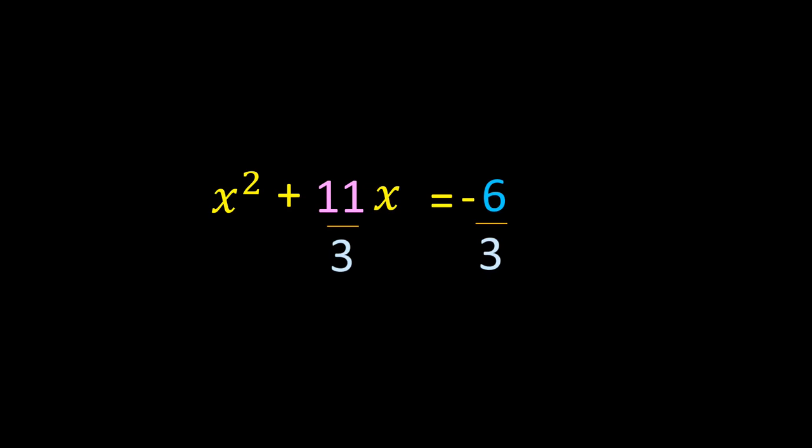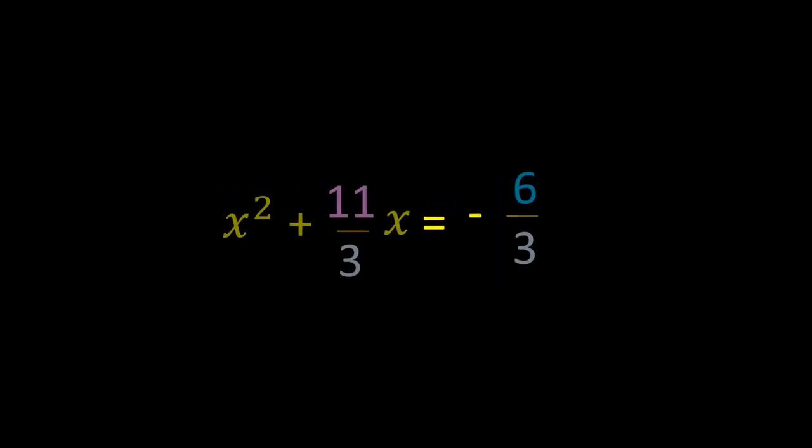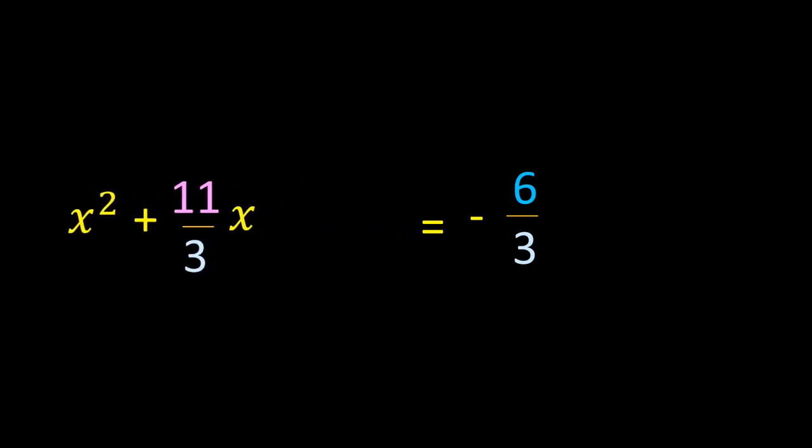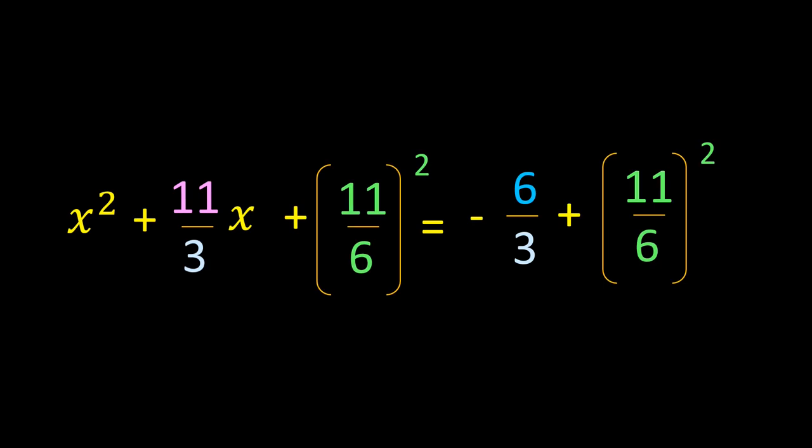To make x² + (11/3)x a perfect square trinomial, we are going to add the b² part to the equation on both sides. When we add equal quantities on both sides of the equation, the value does not change.